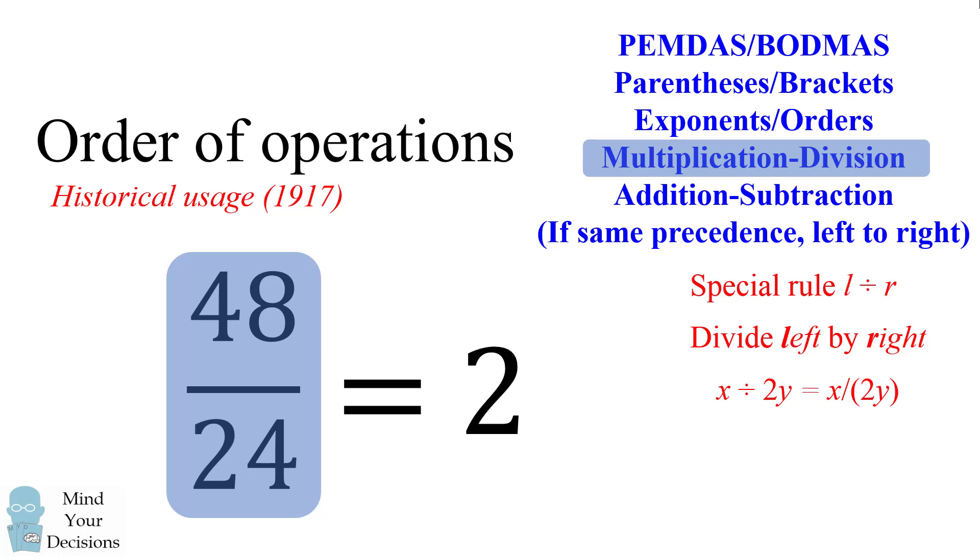So this would have been considered the correct answer historically using the kind of inline typesetting of the division symbol. Nowadays, we don't use this and you can see that calculators don't evaluate the expression this way. So the correct answer under the modern interpretation is 288. Did you get that answer?